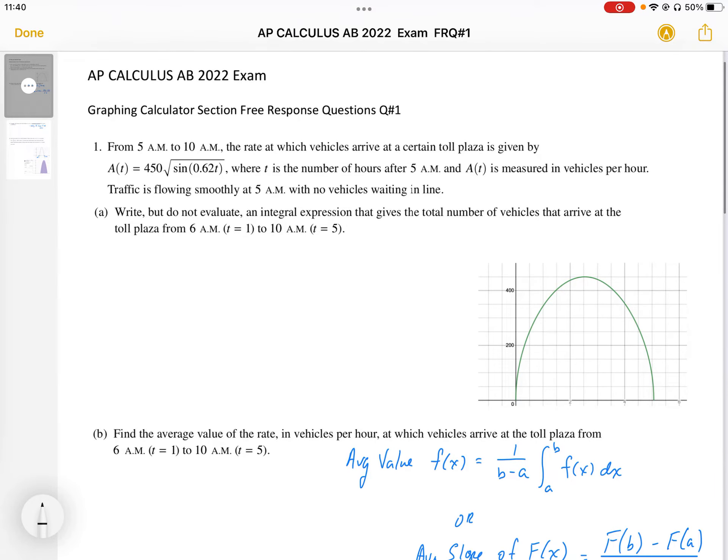From 5 a.m. to 10 a.m., the rate at which vehicles arrive at a certain toll plaza is given by a(t) equals 450 square root sine of 0.62t. It's important to note that the equation we're given is a rate equation.